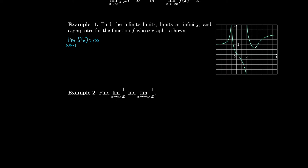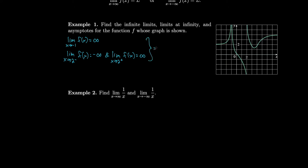Let's see if there are other infinite limits. As we go to 2 from the left, we go down to negative infinity, and from the right, we go up to positive infinity. So the limit as x approaches 2 from the left of f(x) equals minus infinity, while the limit from the right equals infinity. If we have an infinite limit, that gives us a vertical asymptote. So x equals minus one and x equals two are vertical asymptotes.